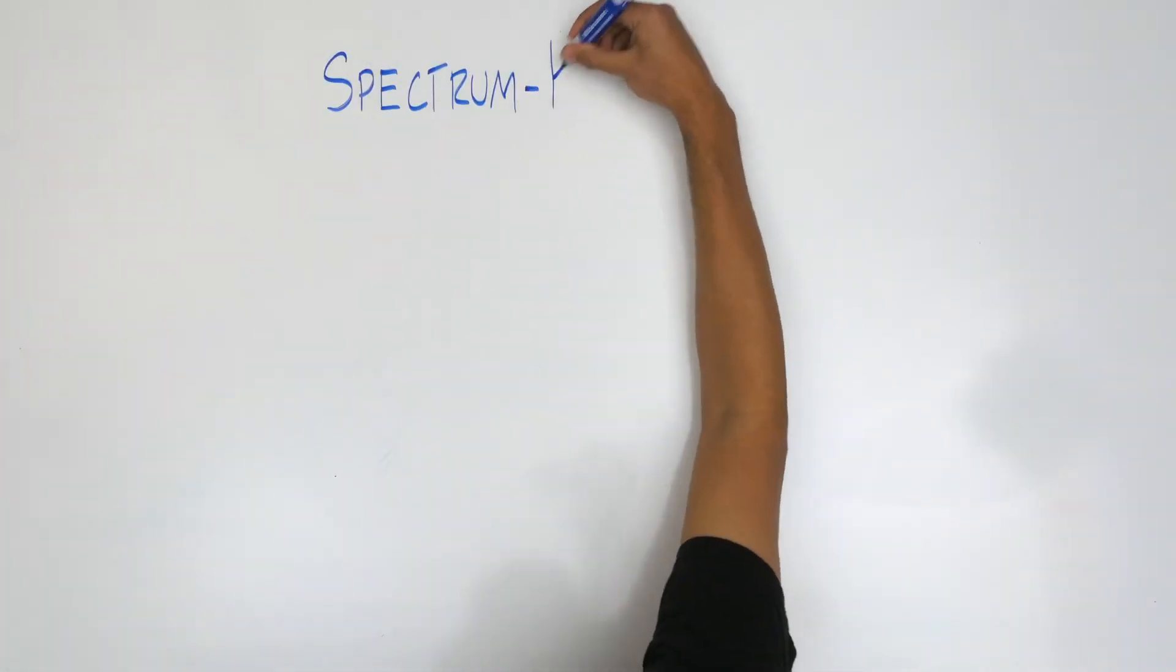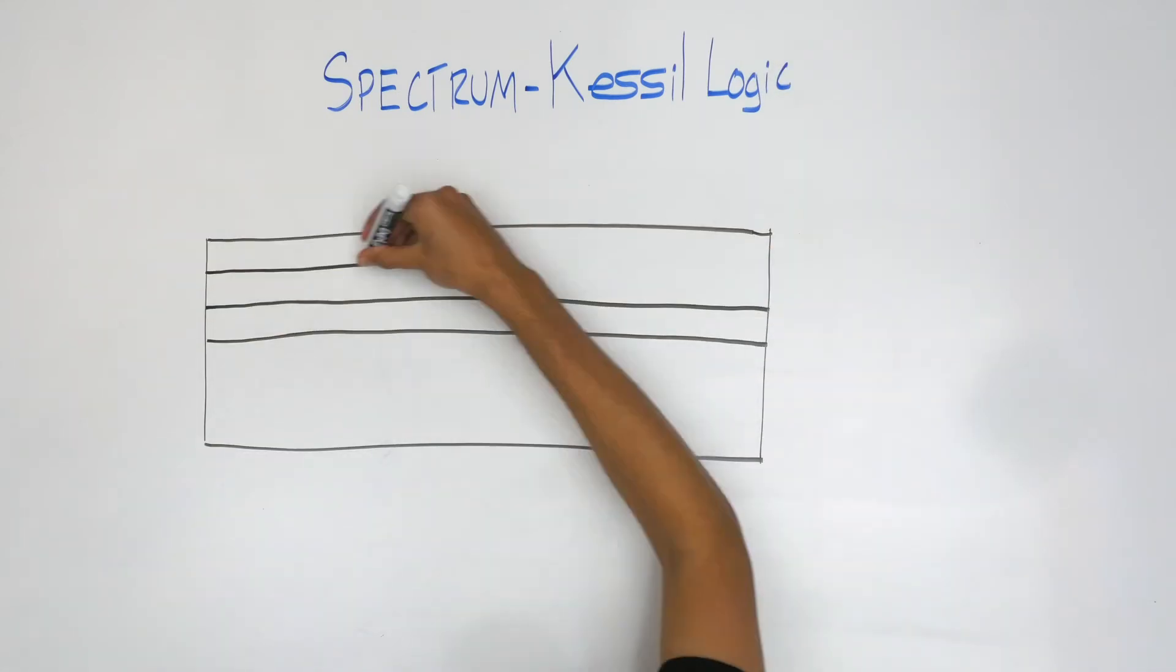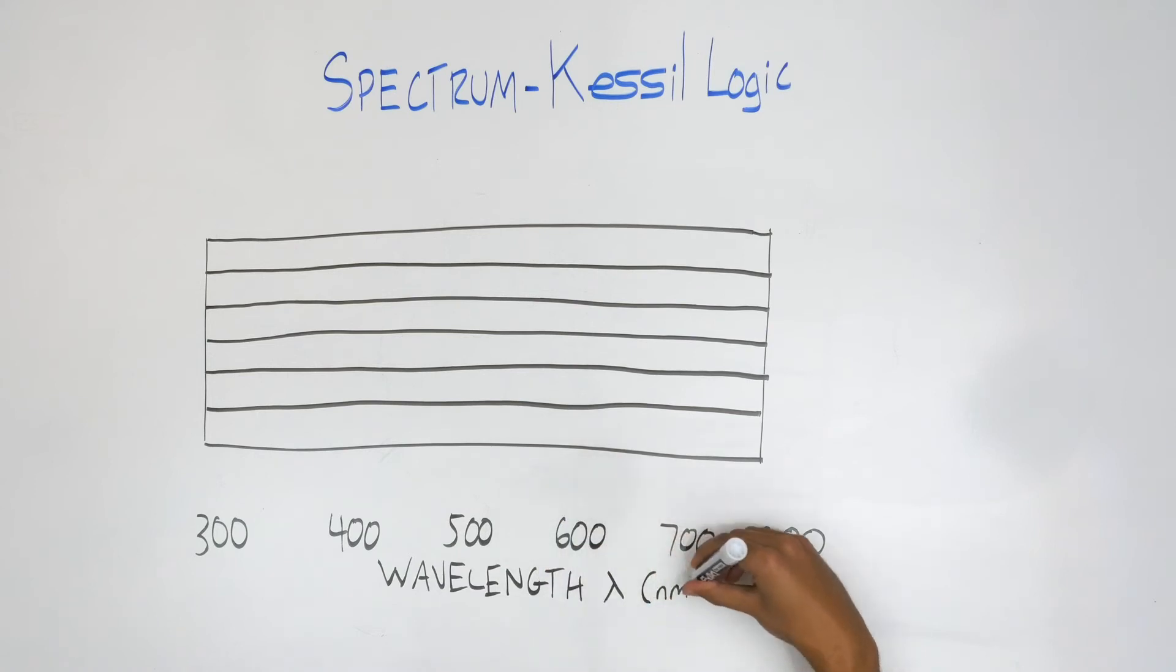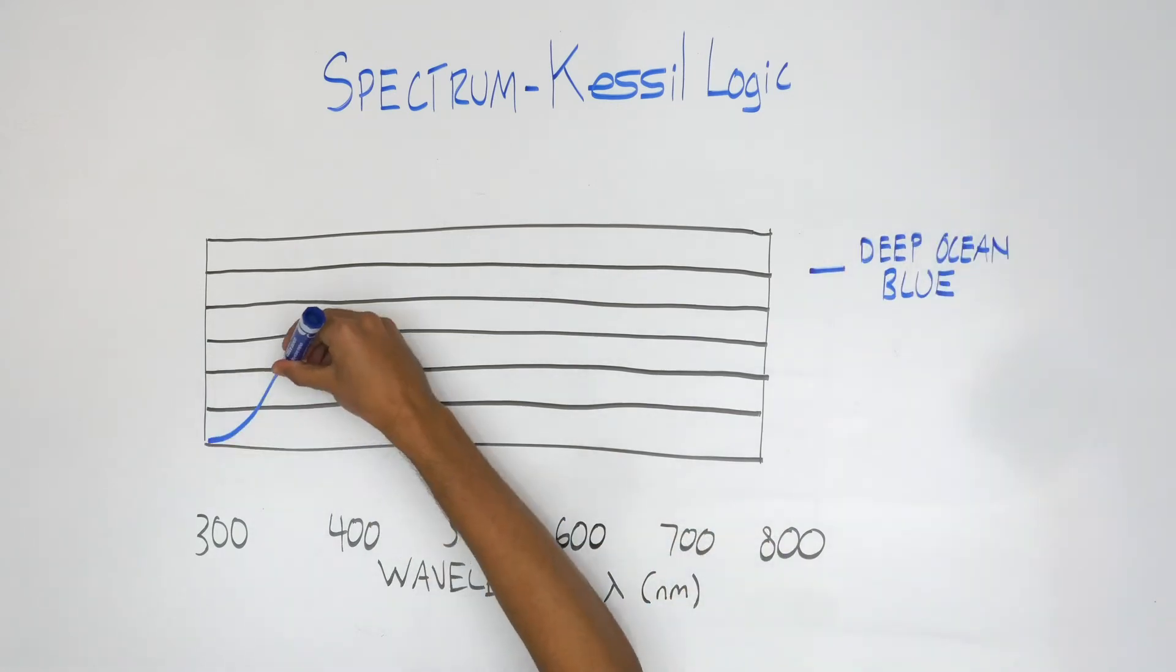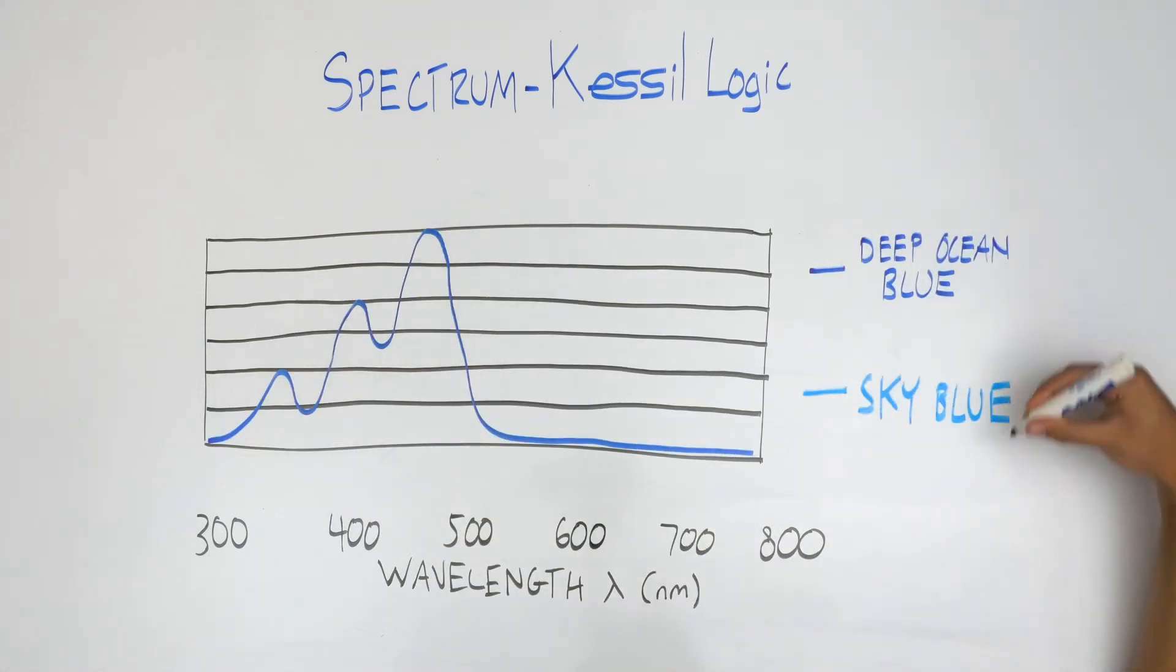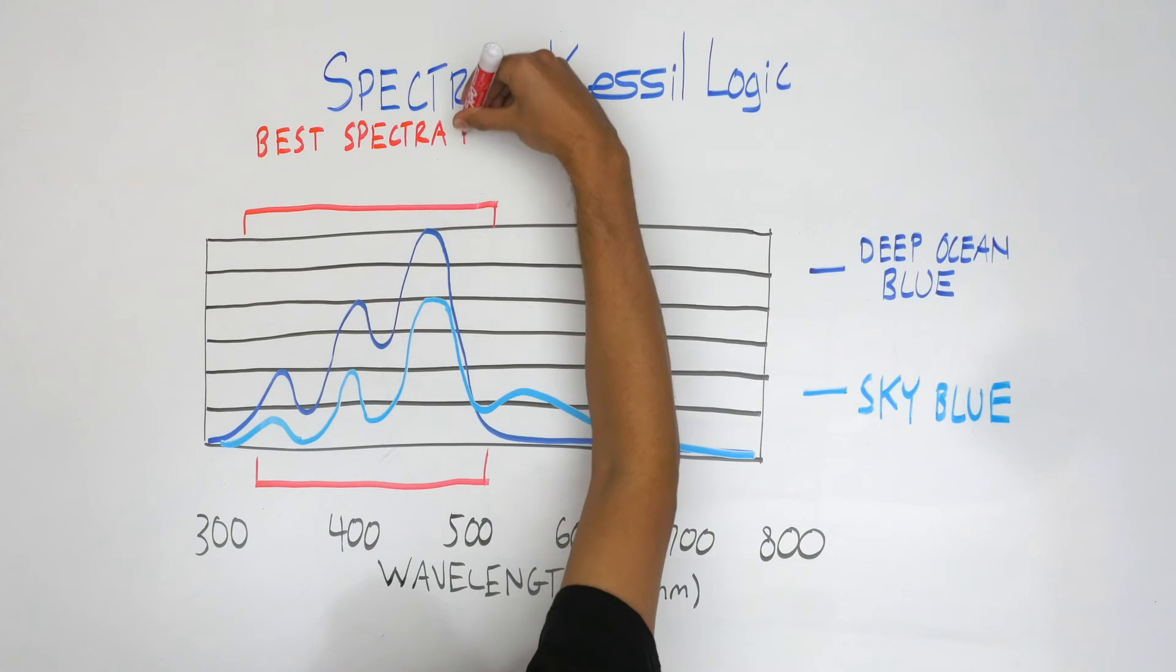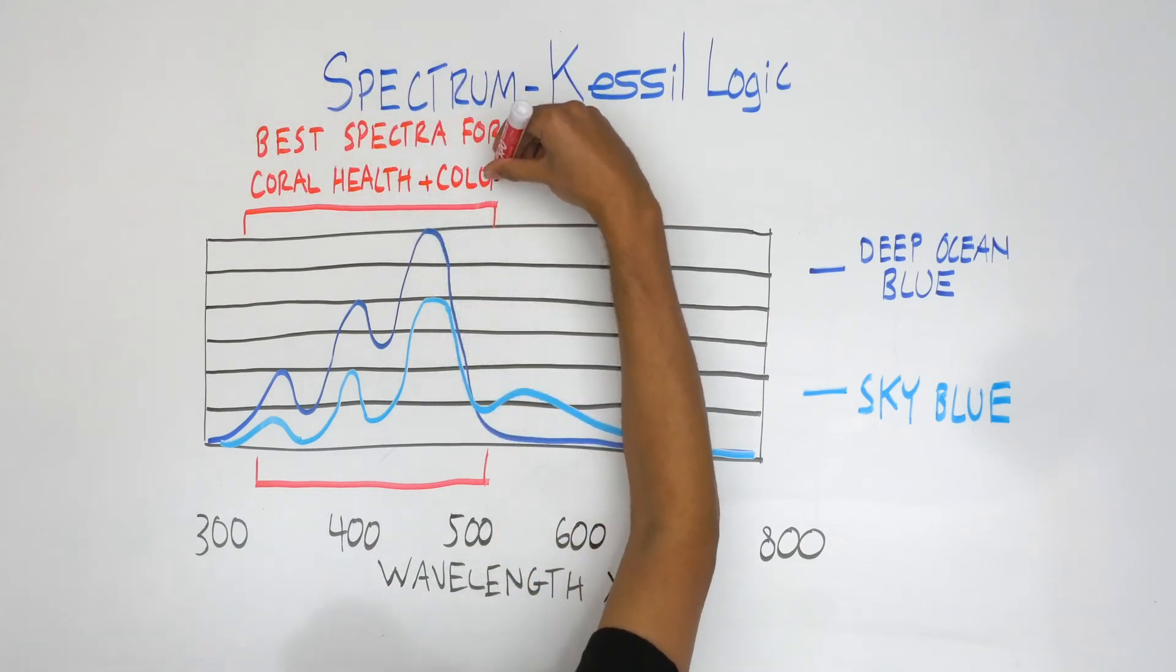Kessel LED Aquarium lights offer a specialized spectrum of light, which is driven by Kessel Logic. Kessel Logic maintains a similar wavelength combination across the different colors in the Tuna Blue range. Each color incorporates the spectra that are best suited for coral growth. The majority of these fall approximately in the 380 to 470 nm range.